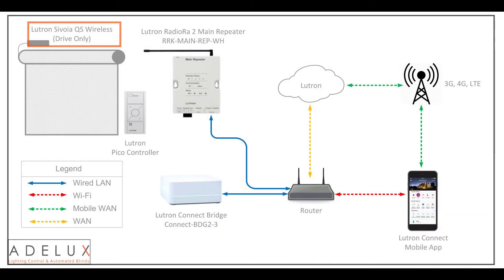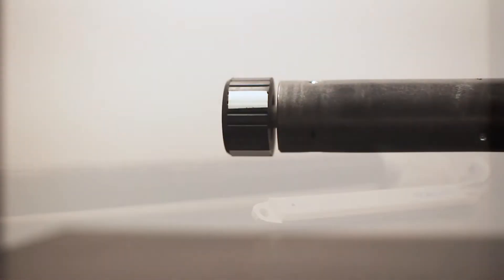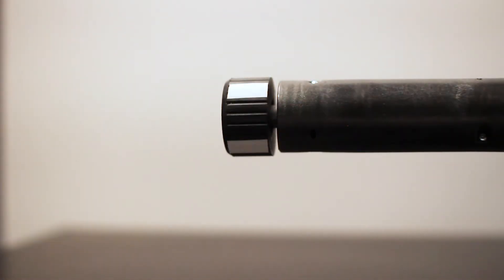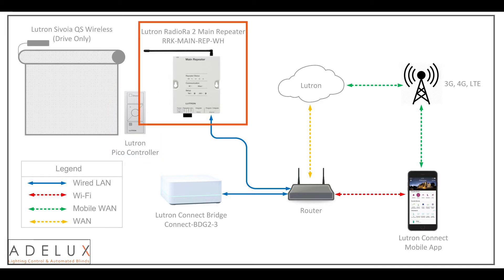This is my current setup. I have a Lutron QS blind — specifically the drive, which is the motor that goes inside the tube to operate the roller blinds. I have a Lutron Pico controller, which is a remote control, and I have a Lutron Radiora 2 main repeater, which is the brain of the system and hosts the Lutron program. It can also be connected to third-party devices if you need to integrate the blinds with other control equipment.